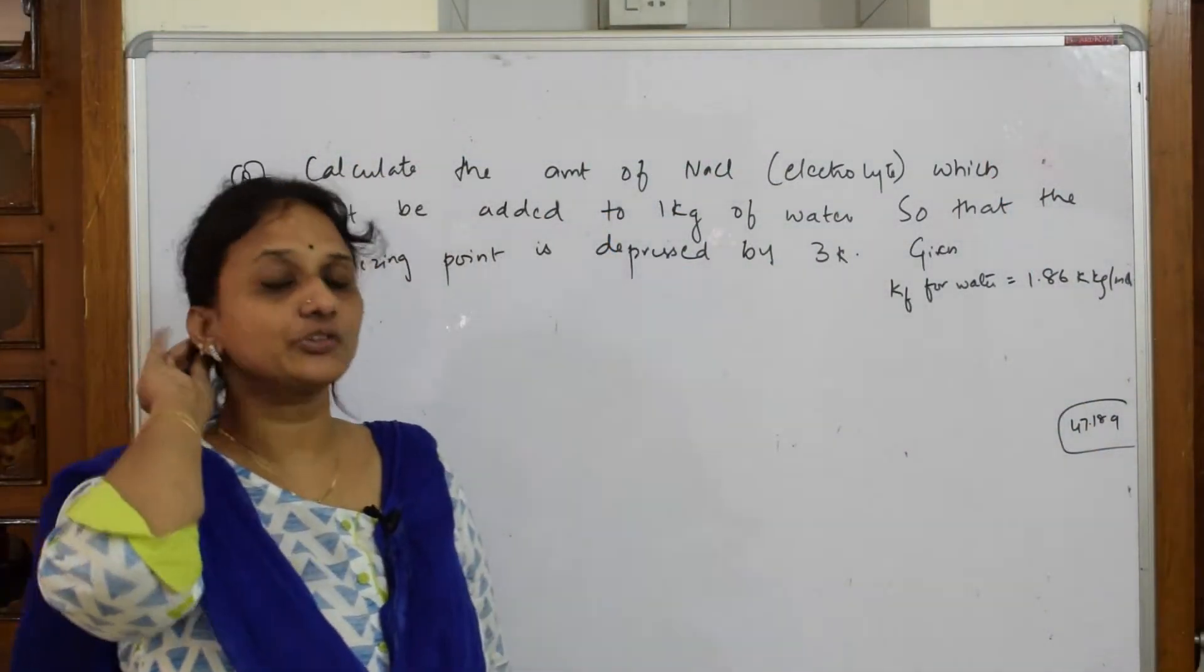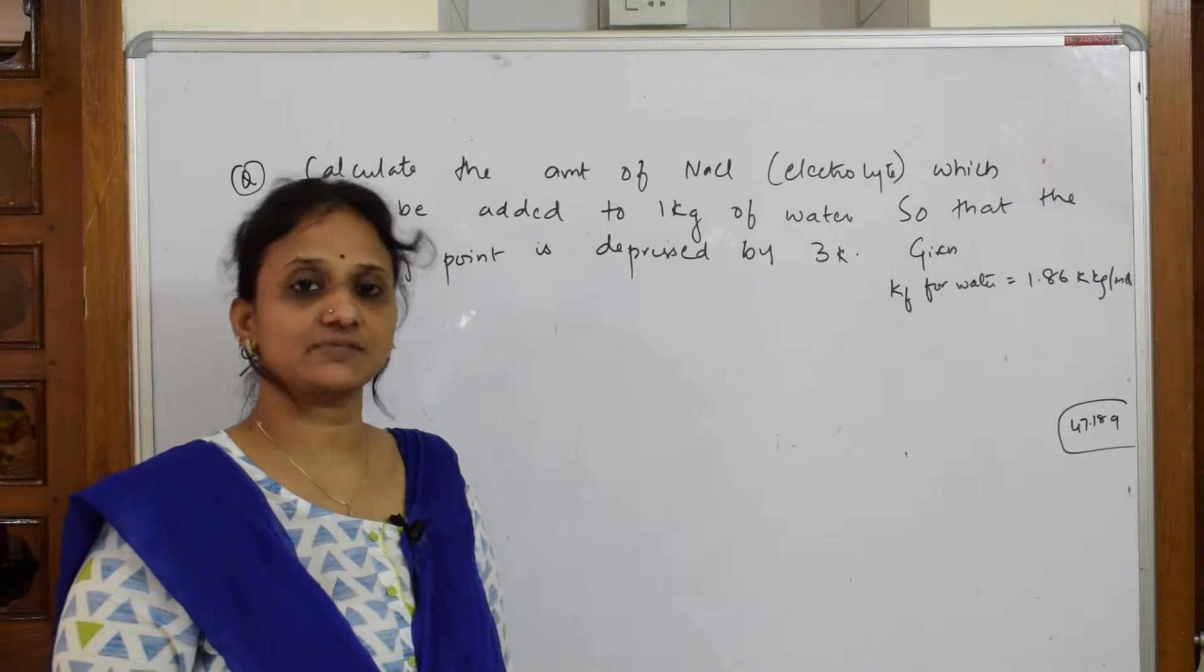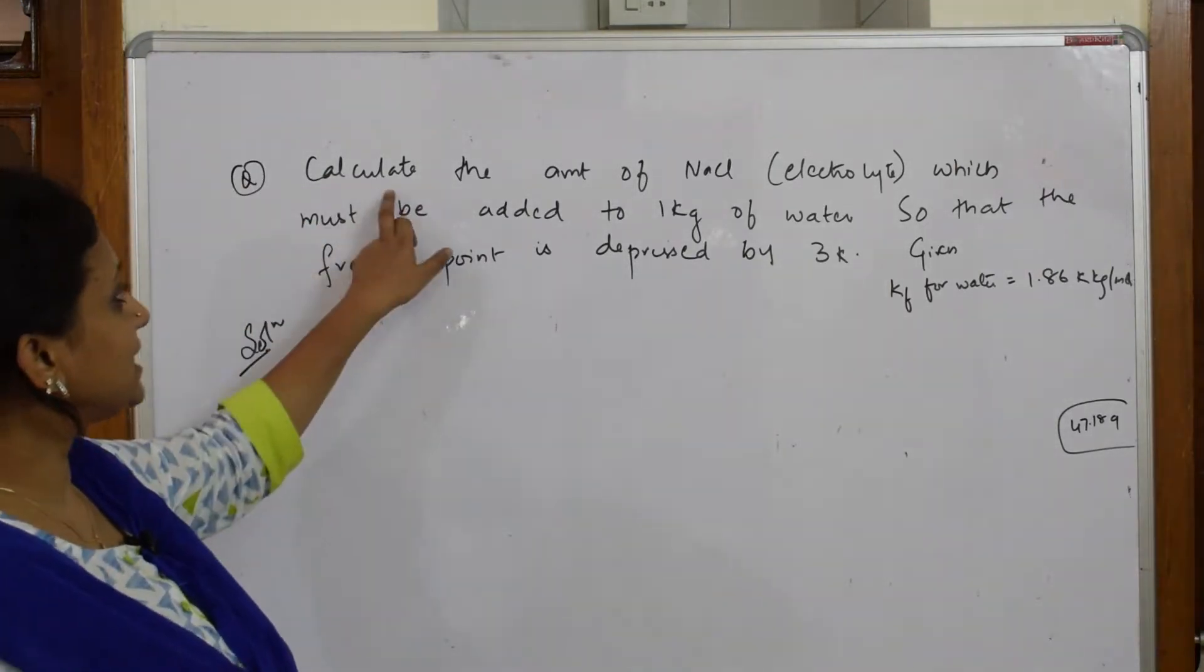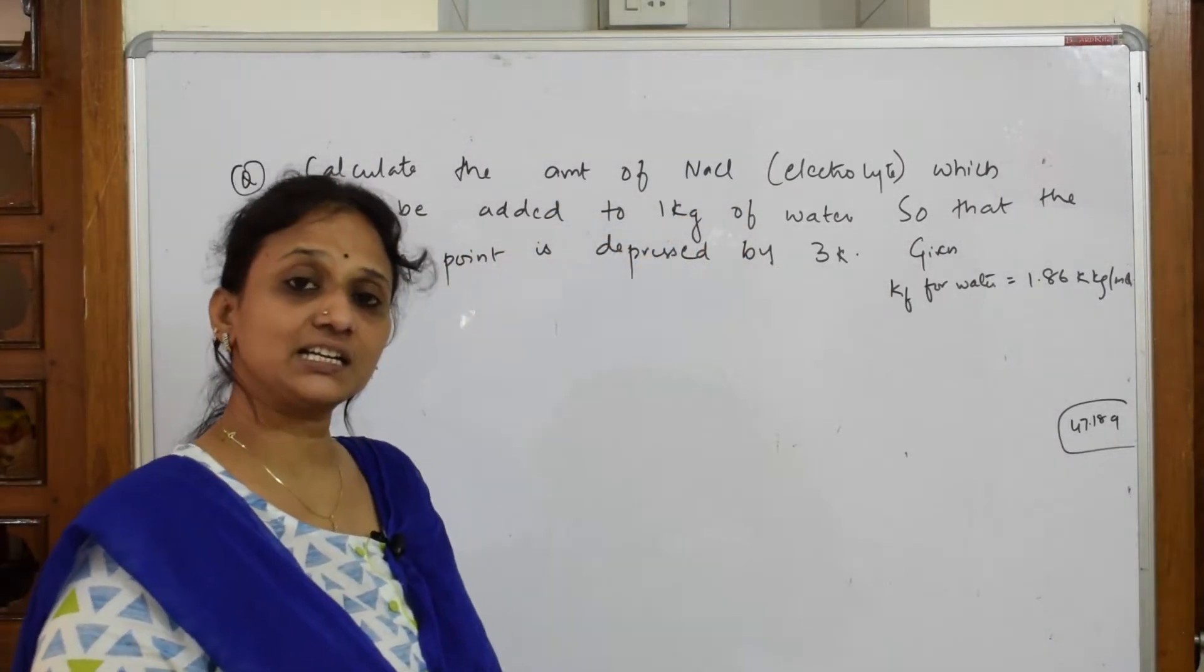One more type of numerical which is going to relate your colligative property as well as your van't Hoff factor. Let's see this. So what do they give us? Calculate the amount of sodium chloride. I have to calculate the amount.